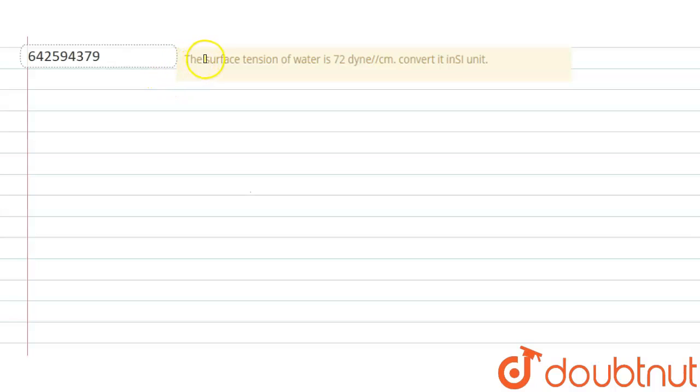The question says the surface tension of water is 72 dyne per centimeter. Convert it in SI units. So we are asked to convert that surface tension which is 72 dyne. We are given surface tension, let's write it as T.